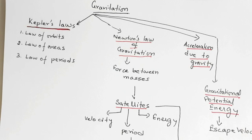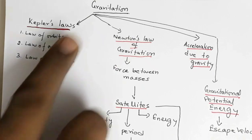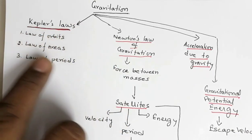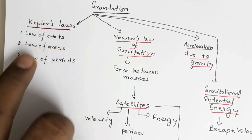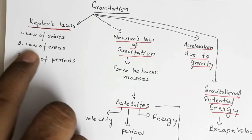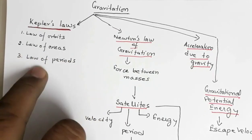Hi everyone, welcome to my channel. In this video I am going to start the chapter gravitation. We'll be discussing Kepler's laws. Before we go into the details, let us see what we will be studying in this chapter. The chapter starts with an introduction, then the first part is Kepler's laws. There are three laws: first law is the law of orbits, the second is law of areas, and the third is law of periods.